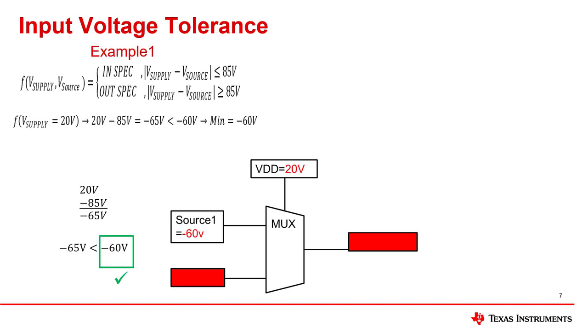Example 1, between the source pins and supply rails. For example, if the device is powered by VDD supply of 20 volts, then the maximum negative signal level on any source pin is negative 60 volts, to maintain the 60 volt maximum rating on any source pin.